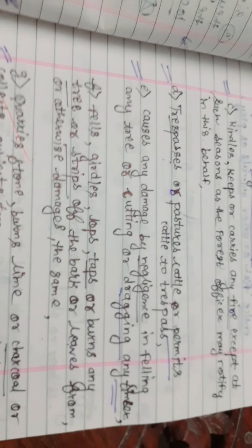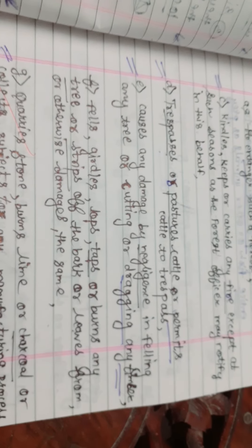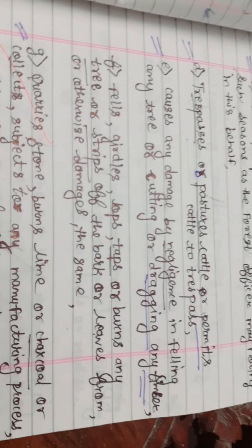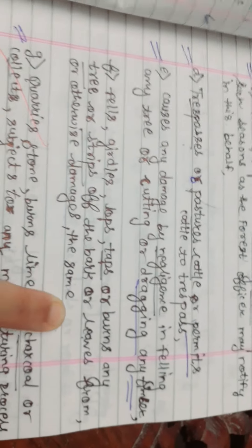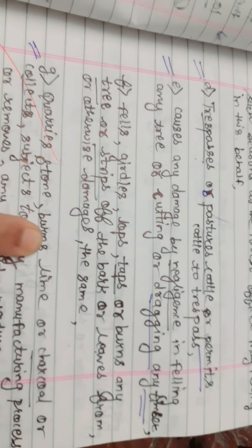Next is fells, girdles, loopes, taps or burns any tree or strips off the bark or leaves from or otherwise damages the same.